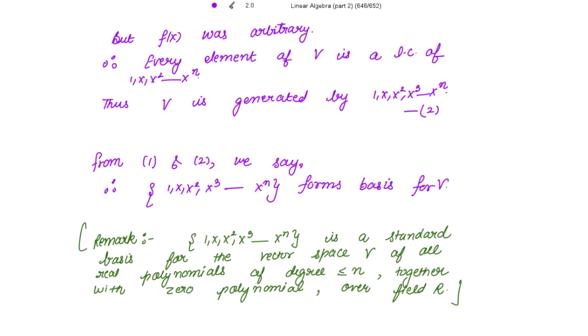Please note that this set of polynomials {1, x, x², ..., xⁿ} is the standard basis for the vector space V of all real polynomials of degree less than or equal to n, together with the zero polynomial, over field R. Keep this in mind — these are the standard basis for V. The result is proved. Thank you.